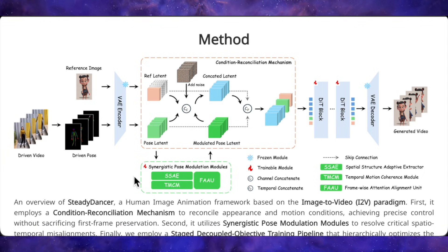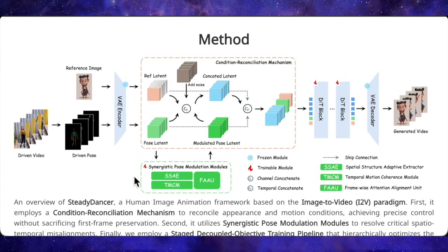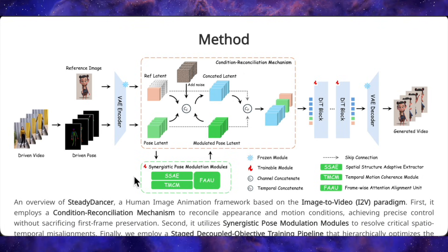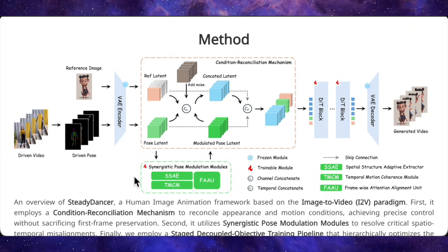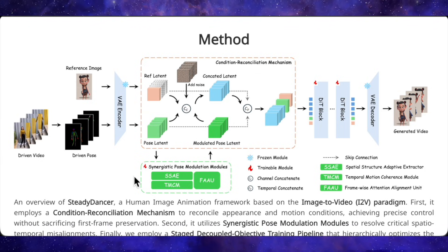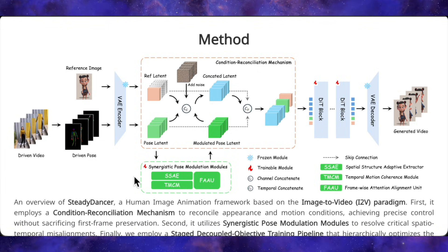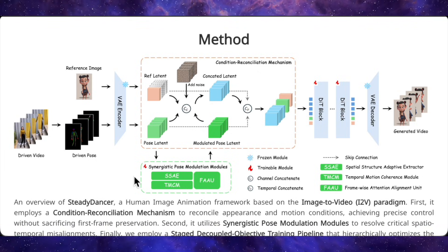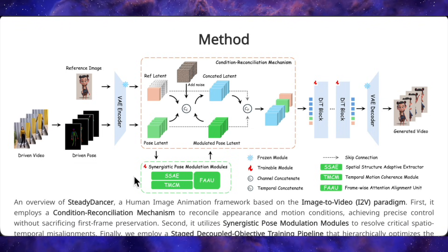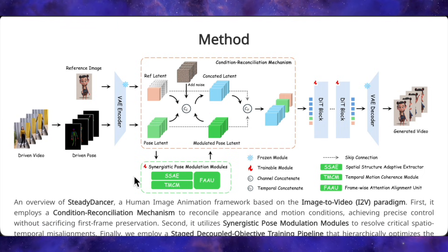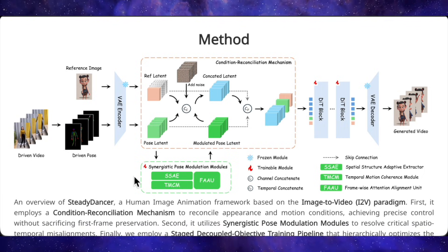On top of that, they built a set of pose modulation modules to handle the fact that real-world images and driving videos almost never align perfectly. There's a spatial structure adaptive refiner that reshapes the pose features to better match your character's actual body proportions, a temporal motion coherence module that smooths out jittery or noisy pose sequences over time so you don't get flickering artifacts, and a lightweight attention alignment unit that constantly checks frame by frame to make sure the pose and the appearance are still lining up correctly. All three work together to bridge the gap between the reference image and the desired motion.